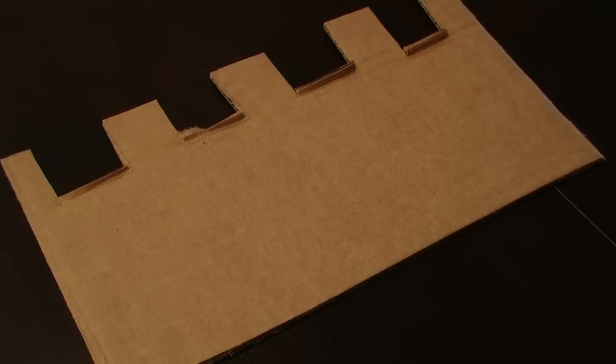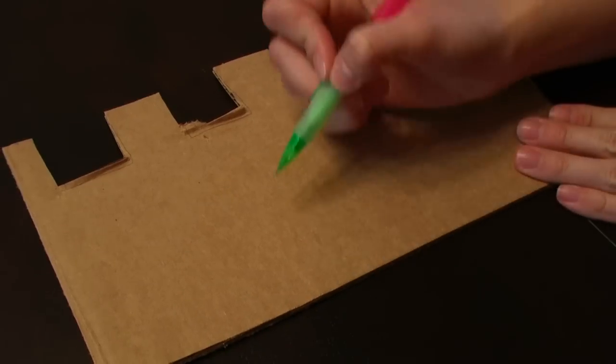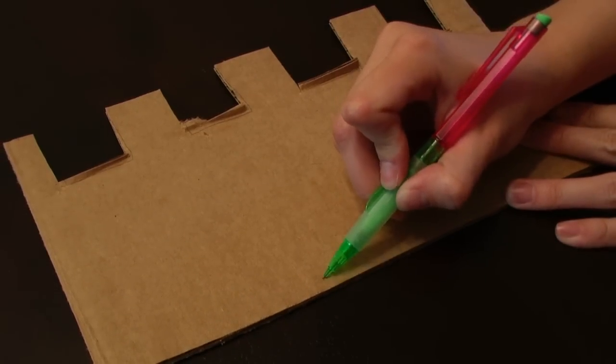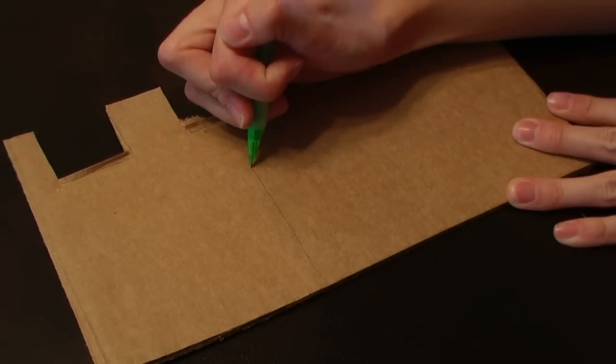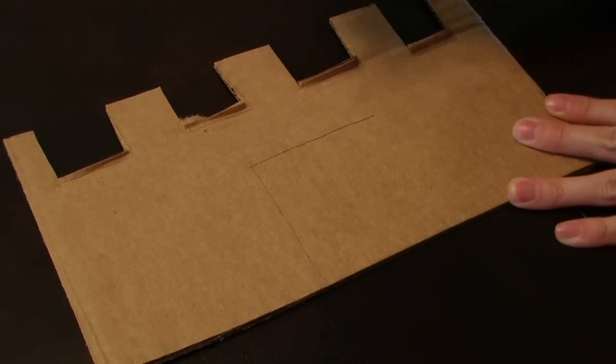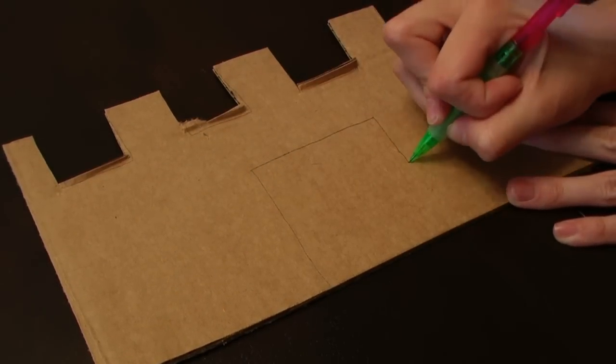Now, you need to pick one of your sides, and you are going to use one of those to make a drawbridge. And you are going to find the middle and draw your bridge. Just make a square.